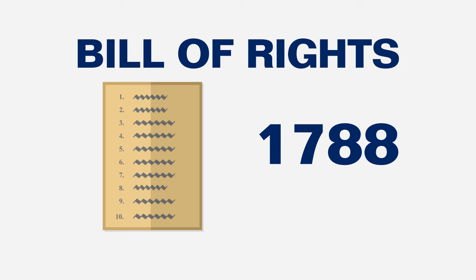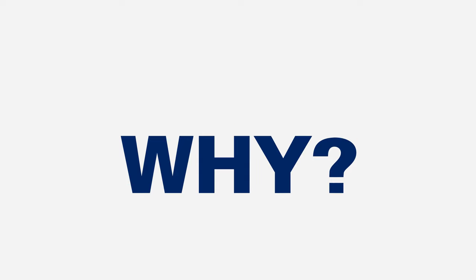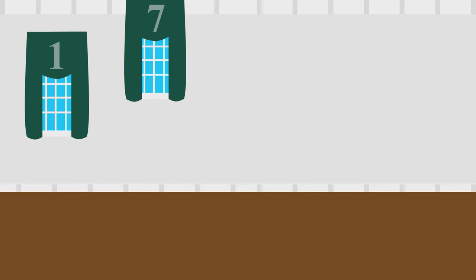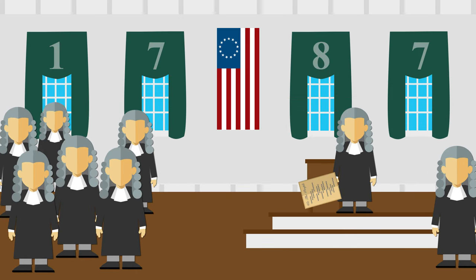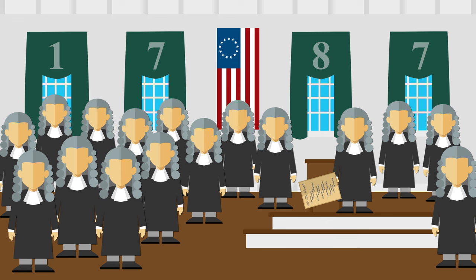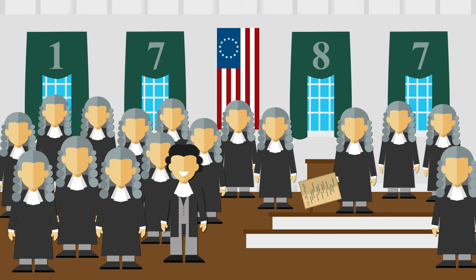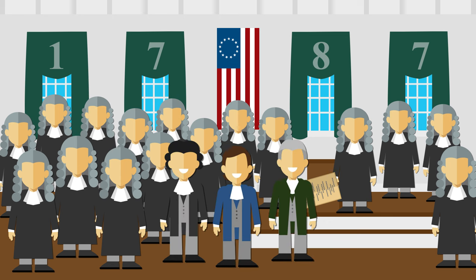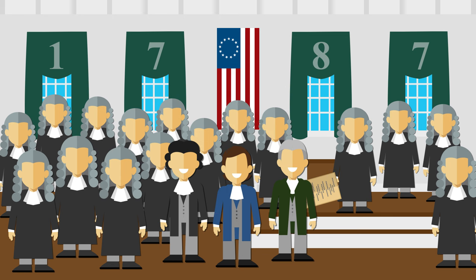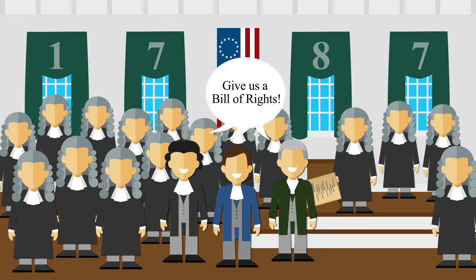Instead, they were added three years later. In 1787, 39 delegates signed in favor of the Constitution, while three others present — George Mason, Edmund Randolph, and Elbridge Gerry — refused because they saw a fatal flaw. They demanded a Bill of Rights.